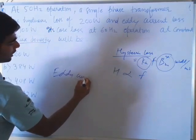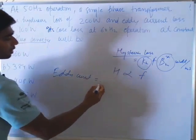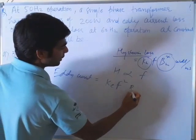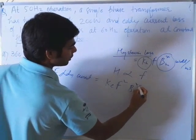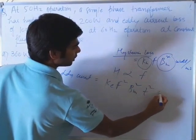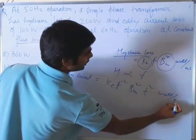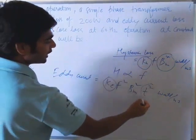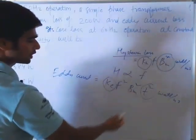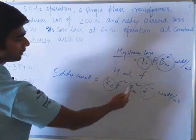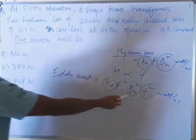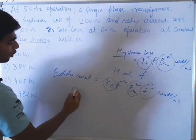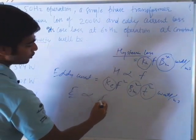Now for eddy current loss, the expression is KE × f² × BM² × T², in watt per meter cube. KE is constant, T (thickness of core) is also constant, and BM is already mentioned as constant in the question. So eddy current loss is proportional to f².